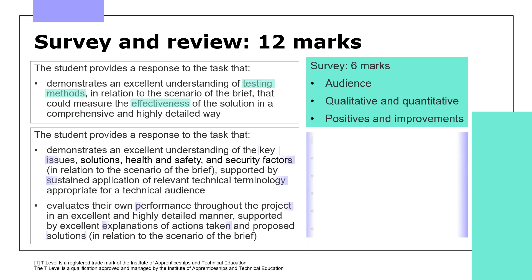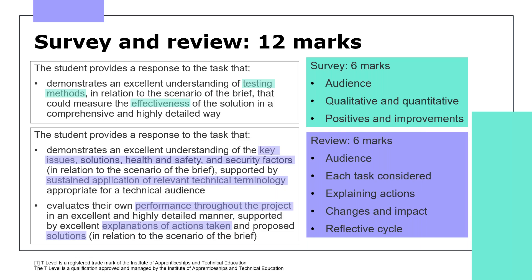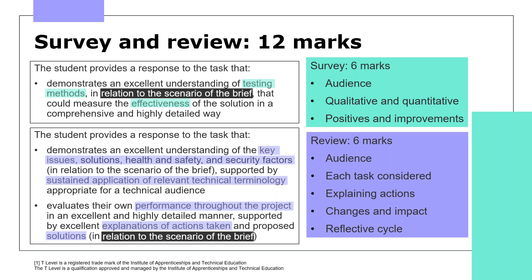The post-project review is assigned the remaining 6 marks, and students will need to consider their own performance on each task, explaining the actions they took, what worked well, what could be changed, and how that change would have impacted on their performance. Adopting a reflective cycle, such as Gibbs for example, might also prove useful for students. Vital as always is making reference to the brief and ensuring that it's relevant to the scenario and context provided.